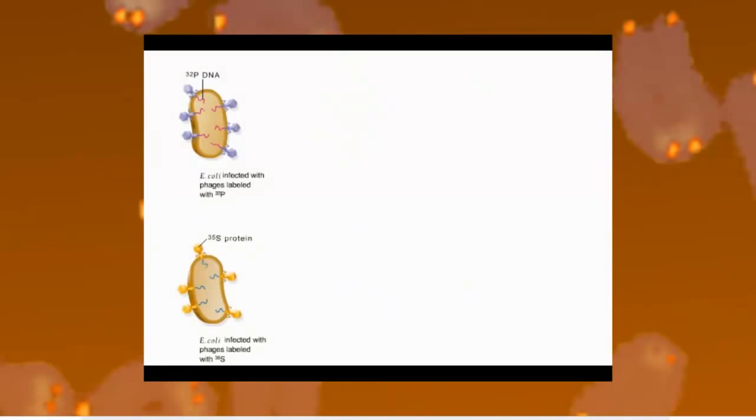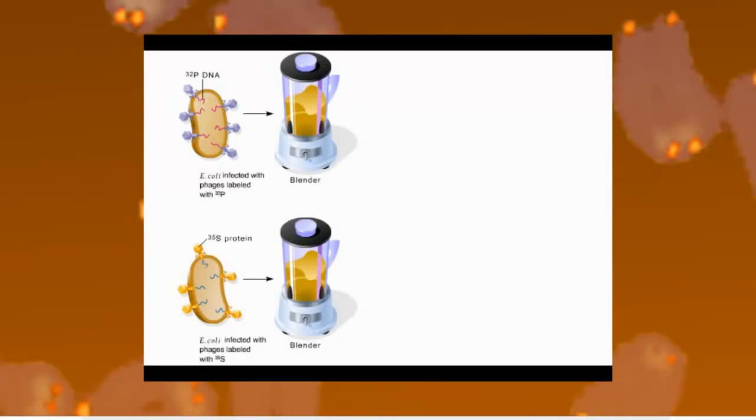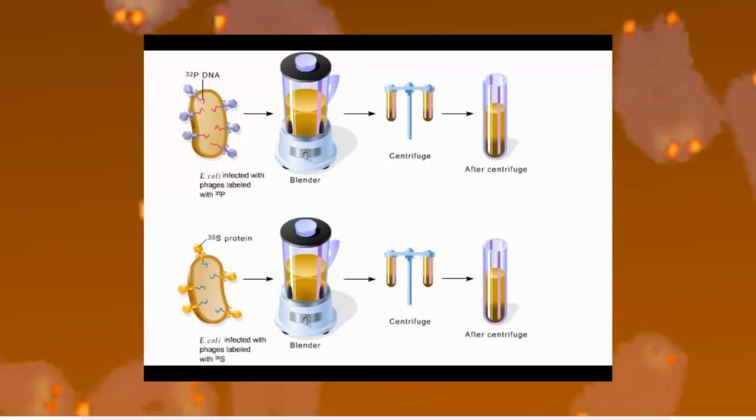In the next phase of their experiment, Hershey and Chase infected E. coli with the two types of labeled T2. They then used a blender and a centrifuge to separate the protein parts of the phage, called the phage ghosts, from the rest of the infected cell.